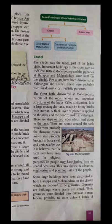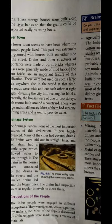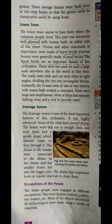The next part is the Lower Town. The Lower Town is where the common people lived. It was also so well planned — houses were built in a proper manner. Burnt bricks and mud bricks were used for making the houses. The roads were properly built at right angles, dividing the city into rectangular blocks. The houses were one or two stories built around a courtyard. There were both large and small houses, with separate bathing areas and proper water supply.